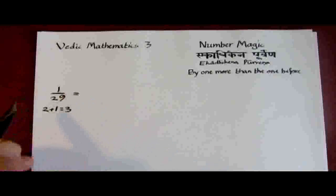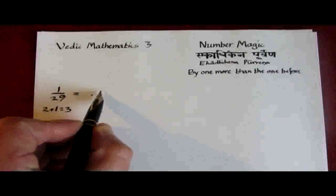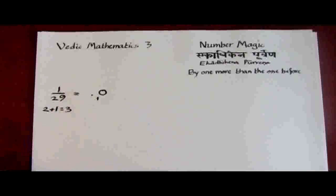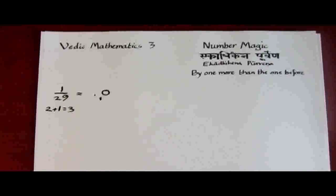So we divide the 3 into the numerator 1, getting 0, remainder 1. And if you remember from the previous session, we annex the remainder to the 0, making 10 for the next step.